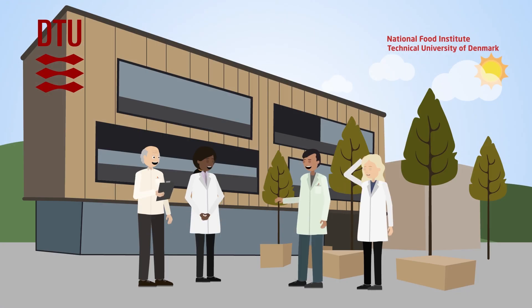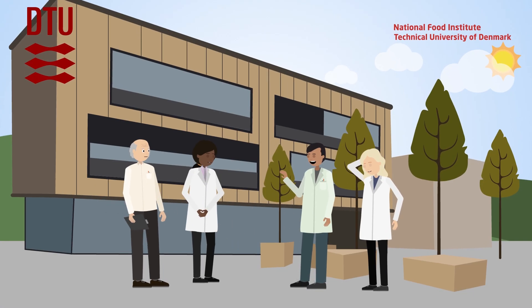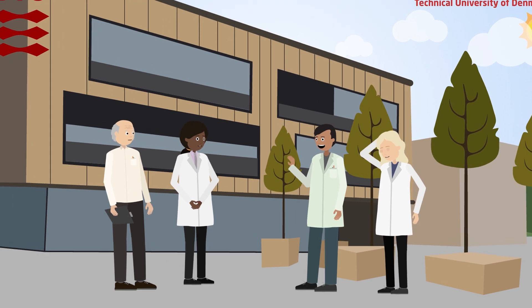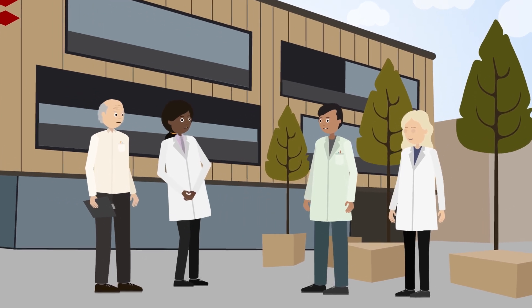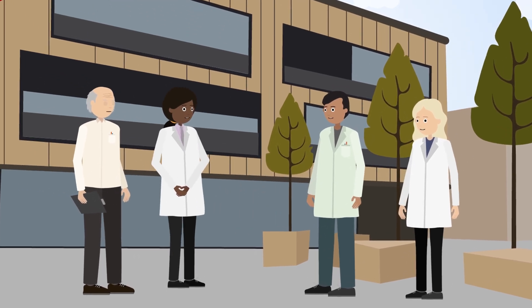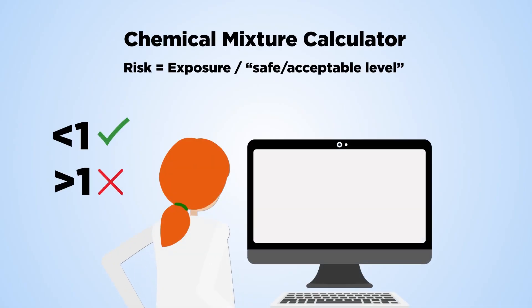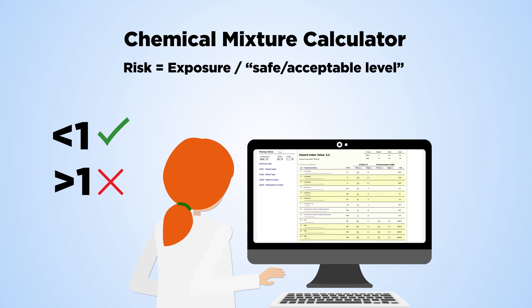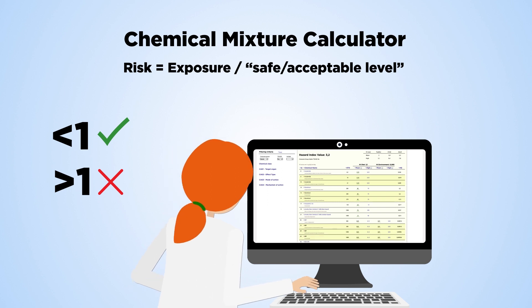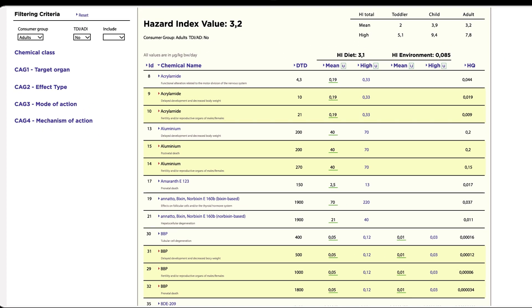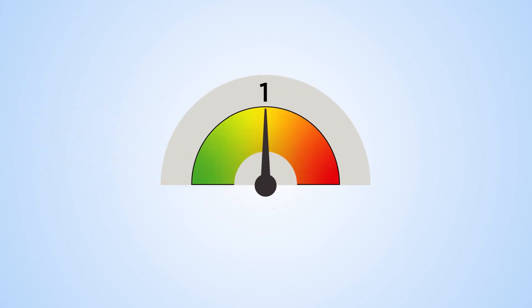A team of researchers at the Technical University of Denmark proposes a new tool to deal with the challenge. They created a computational interface, the Chemical Mixture Calculator, that, based on the hazard index method and assuming additivity, calculates the risk of chemical exposures.